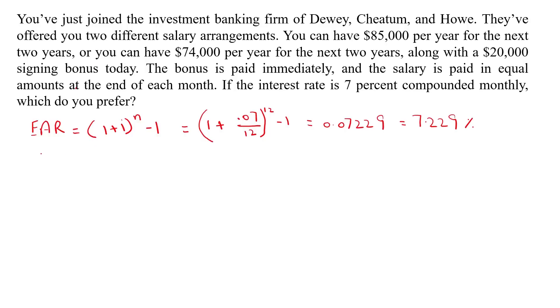The present value is equal to cash flow times [1/i - 1/(i(1+i)^n)]. So, the cash flow is $85,000.